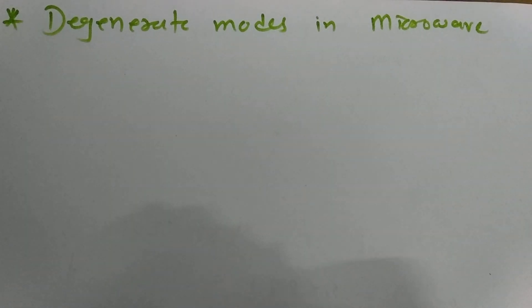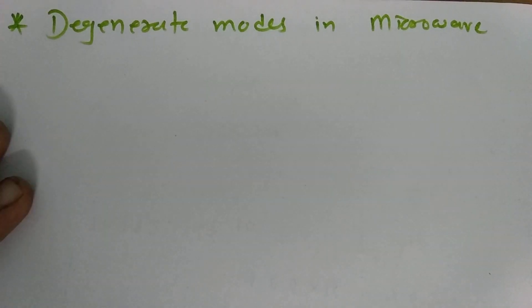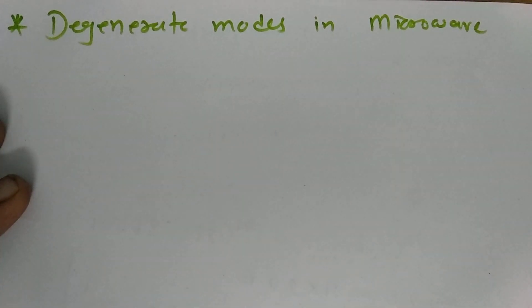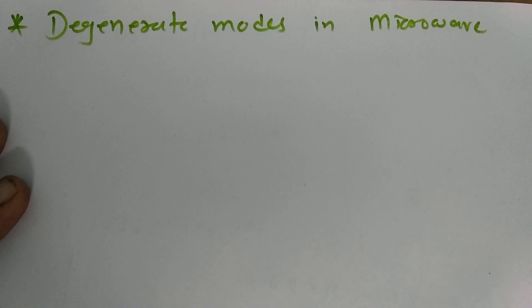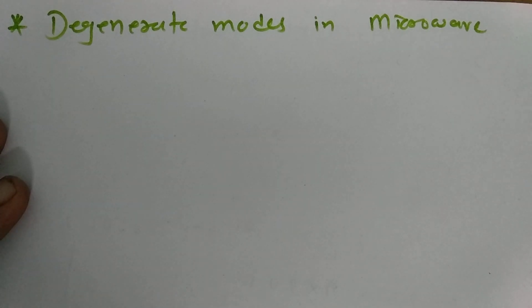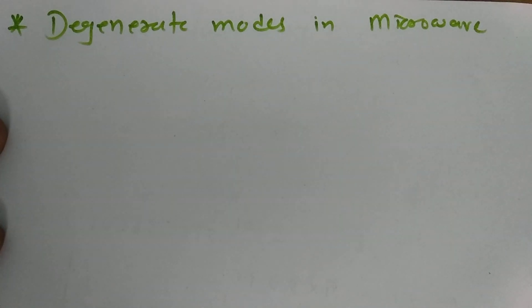Welcome to the microwave engineering playlist. In this session I will be explaining degenerate modes in microwave. Degenerate modes are those modes where the frequency of operation is the same for all those modes. For example, if two or more modes have the same cutoff frequency, then these modes are called degenerate modes.